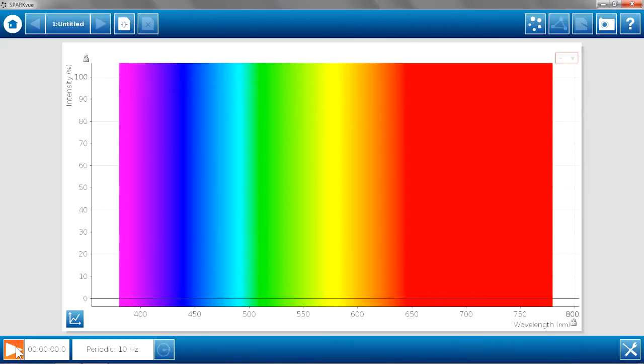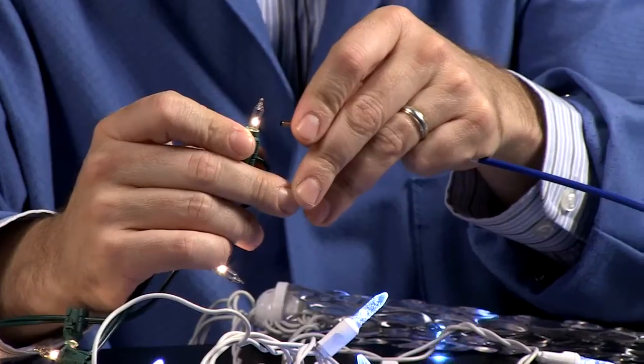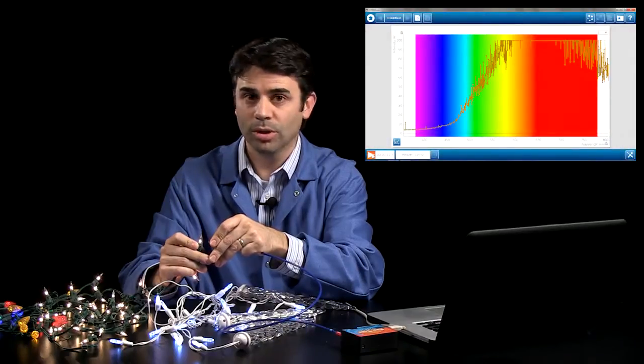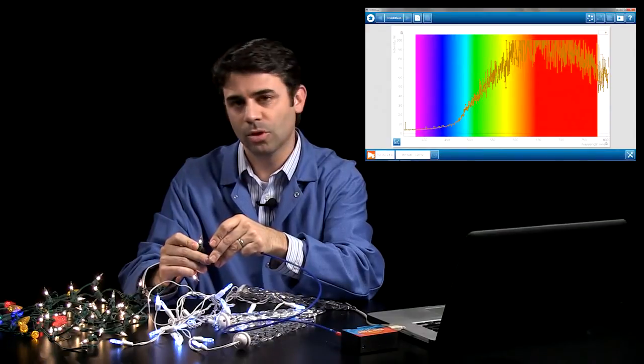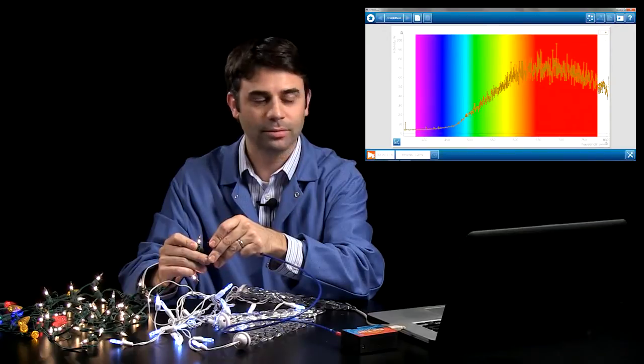We'll start our spectrometer. On the software, I'm running intensity versus wavelength. We'll just take a look at this incandescent bulb. Notice it's a very broad spectrum going all the way from blue over to red and into infrared. It's actually a very bright bulb.